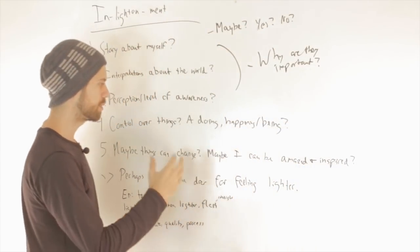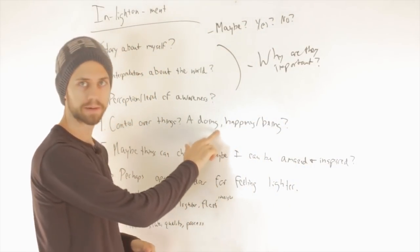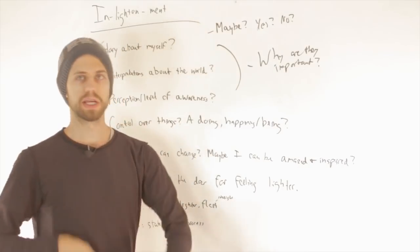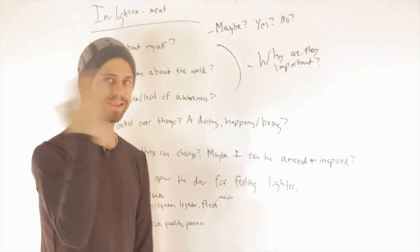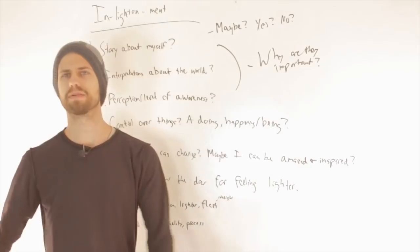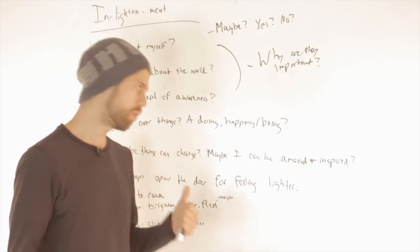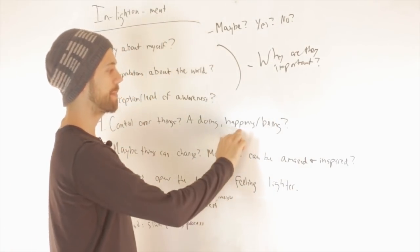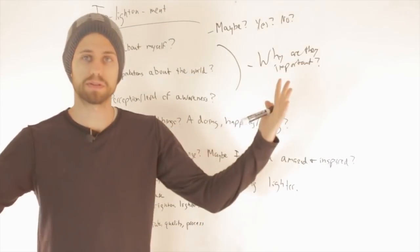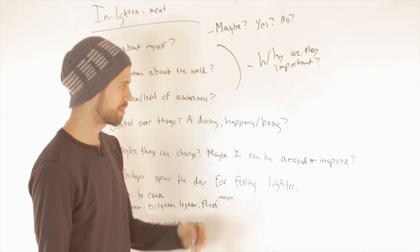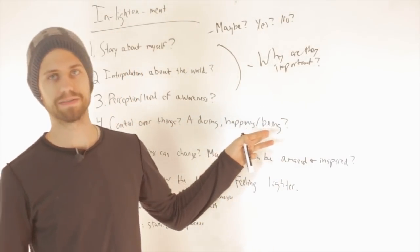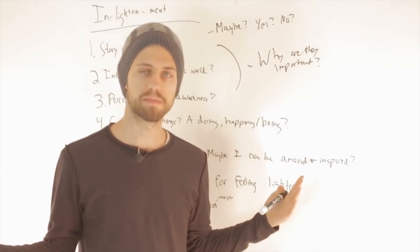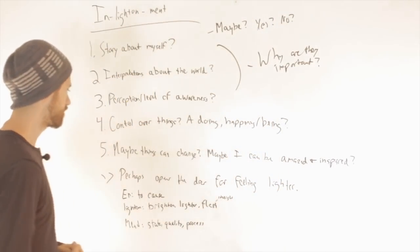And we can ask ourselves, do we really see life as a doing? Meaning anything that happens, anything we want to happen, anything that occurs in our lives is something we have to do. We have to make it happen. Or could it be a happening? Something that just happens? Or something that is more reflective of just purely a state of being?